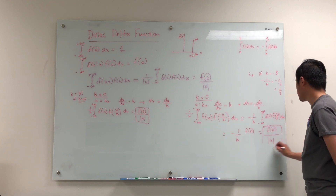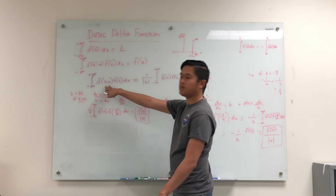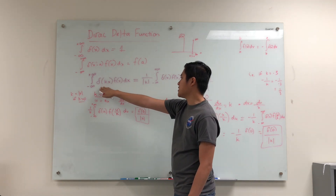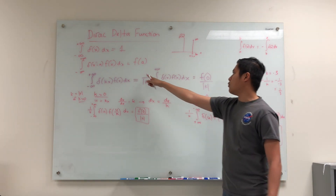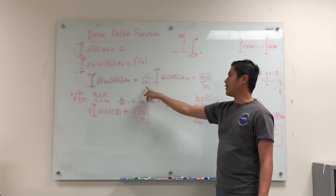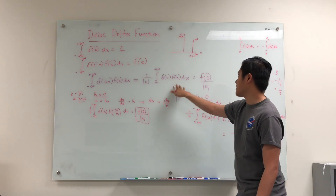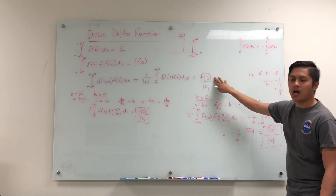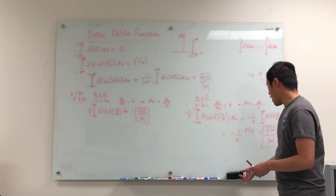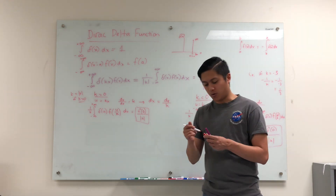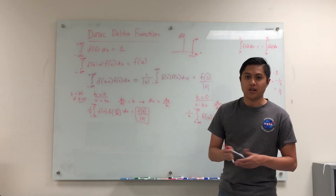So we have just shown the property that if we have this specific case where the delta function has a constant multiplying the argument, we're just going to have 1 over the absolute value of the constant with the same delta function — just delta of x, f of x dx — which is just going to be f of 0 over the absolute value of k. I hope this video was informative. I hope you learned quite a bit today. Tune in next time for more videos. Thank you.